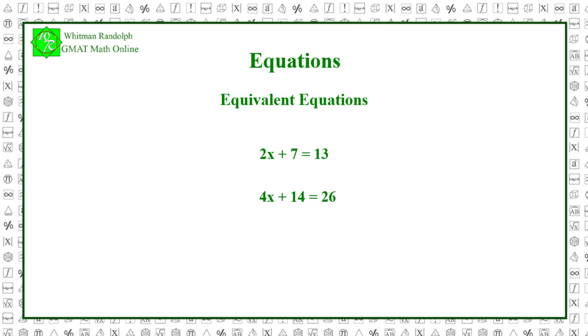If one equation is equivalent to another, then the second equation gives us no new information that we didn't already have in the first equation. Every solution of the first equation is also a solution of the second. If two equations are not equivalent, they are said to be independent.